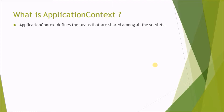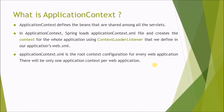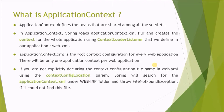Application context defines the beans that are shared among all the servlets. Spring loads the application-context.xml file and creates the context for the whole application using context loader listener that we define in our application's web.xml. Application context.xml is the root context configuration; for every web application there will be only one application context per web application. If you are not explicitly declaring the context configuration file name in web.xml using the context config location param, Spring will search for application-context.xml under the WEB-INF folder and throw a file not found exception if it could not find it.